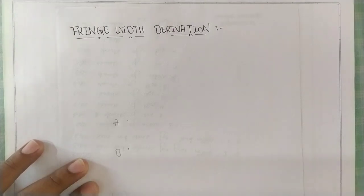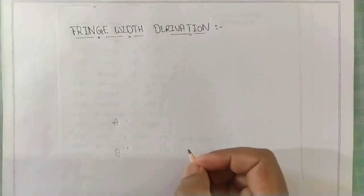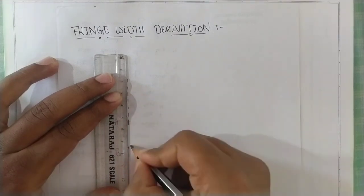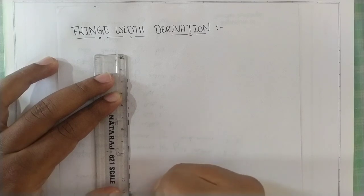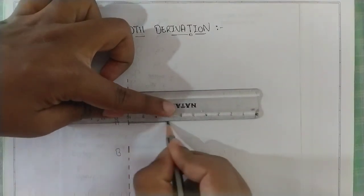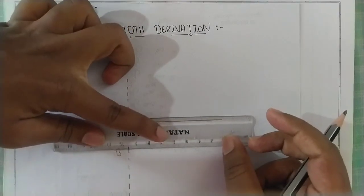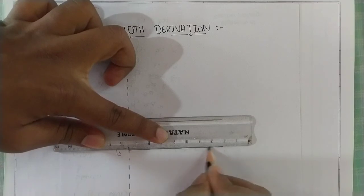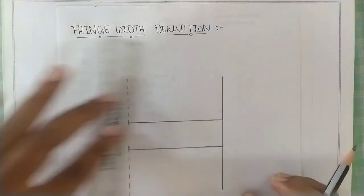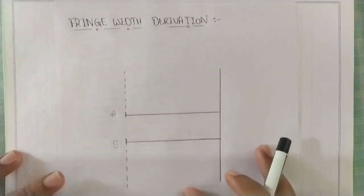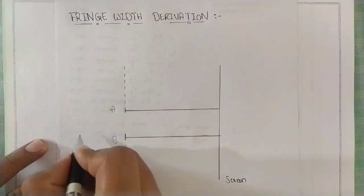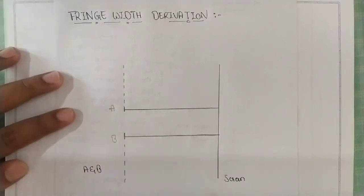Now I will go on drawing the rest of the elements. Let us take a dotted line to represent the mark here. So A and B represent the double slit. Now let me draw a line perpendicular to A and perpendicular to B — they are both parallel to each other. On the other end, let me take a line. This line represents the screen. So this is our screen and this is our double slit, A and B slits.